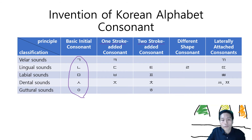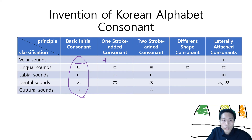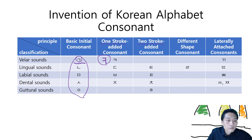The principle behind added consonants is basically whether the sounds are tougher or not. For 기역, it's a less tough sound, but when you add one more stroke, it becomes a tougher sound — that's 키읔. For the lingual sound 니은, you add one more stroke to get a slightly tougher sound — that's 디귿.